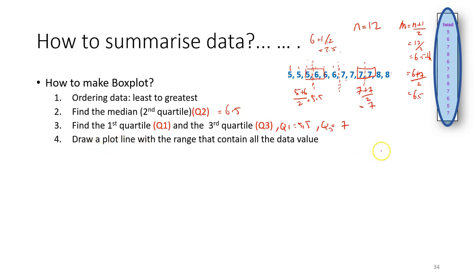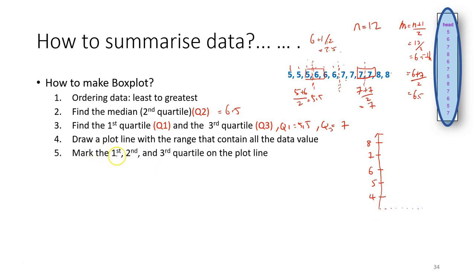After finding those values, we need to draw a box plot line — a line that spans the range of all values. In this case our smallest value is 5 and the largest is 8, so we mark values 5, 6, 7, 8 on the line. After that, we mark the first and third quartiles and also the median. Our median is 6.5 — the median line is usually a bit longer. The first quartile is 5.5 and the third quartile is 7. Once marked, we make a box between Q1 and Q3.